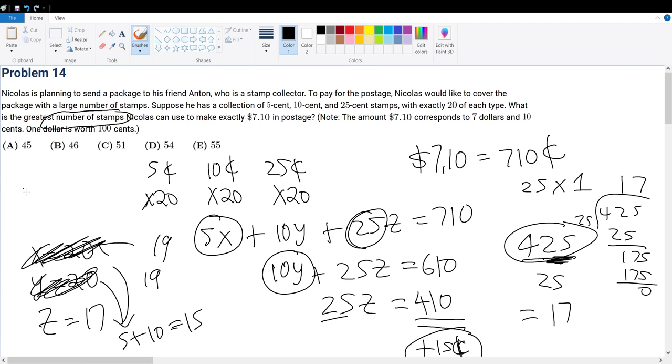So what is 19 plus 19 plus 17? Well, that's 38 plus 17 and that's 55, bringing you to answer choice E.